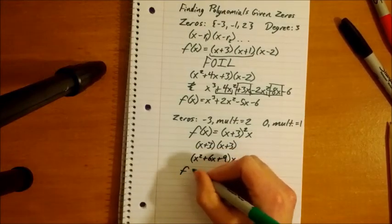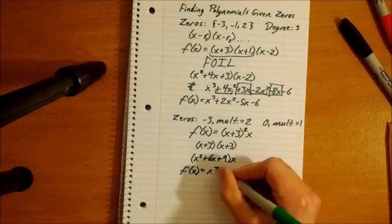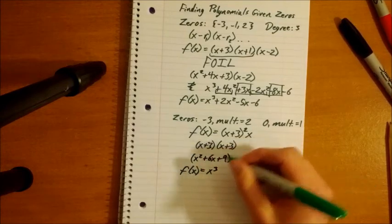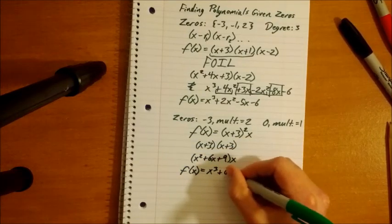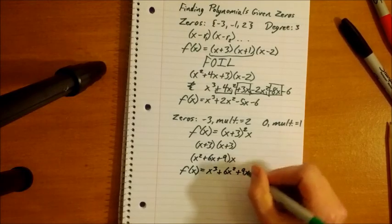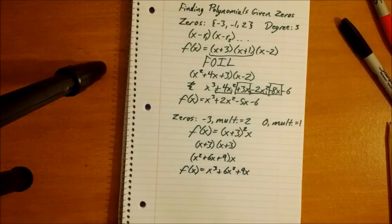So our final answer. Is that your final answer? Yeah, I had to say it. Okay. X cubed, x times x squared is x cubed, plus 6x squared, plus 9x. And that is our final answer. And that is how we find polynomials if we're given zeros.